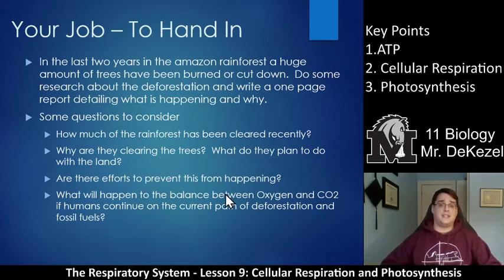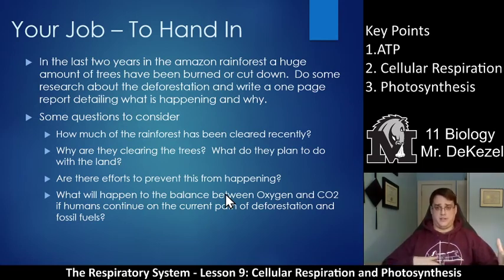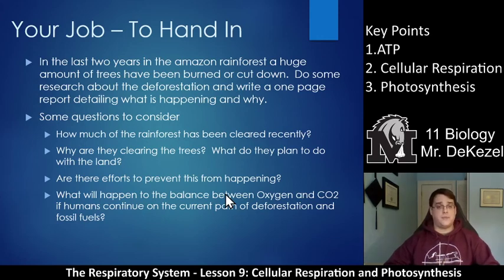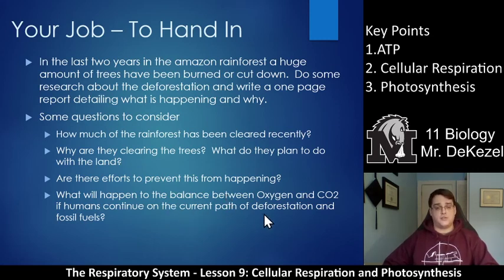What I'd like you to do — and this is the hand-in assignment for this unit — is do some research about the Amazon Rainforest and how this process of carbon dioxide and oxygen being transferred back and forth is being disrupted. In the last two years in the Amazon Rainforest, a huge amount of trees have been burned or cut down. I'd like you to write a one-page report detailing what is happening and why — specifically, what is happening with deforestation and why it is happening. Questions to consider: How much of the rainforest has been cleared recently? Why are they clearing the trees and what do they plan to do with that land? Are there efforts to prevent this? And what will happen to the balance between oxygen and CO2 if humans continue on the current path of deforestation and using fossil fuels?